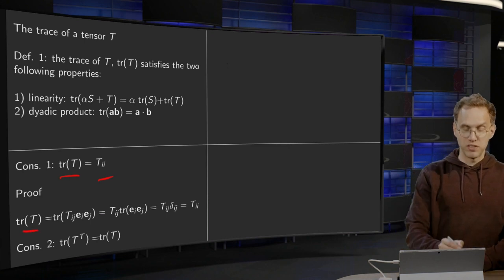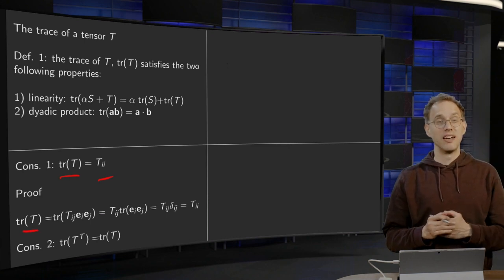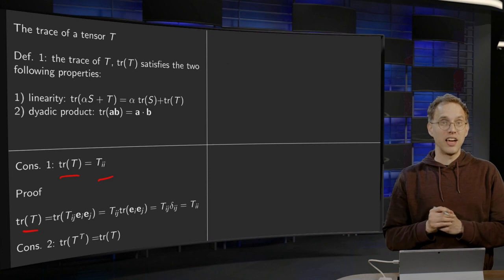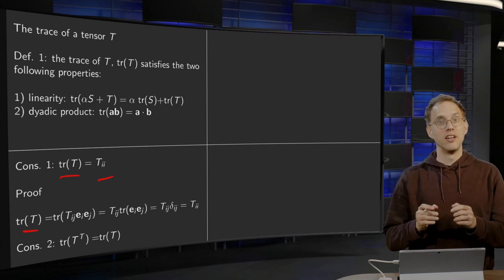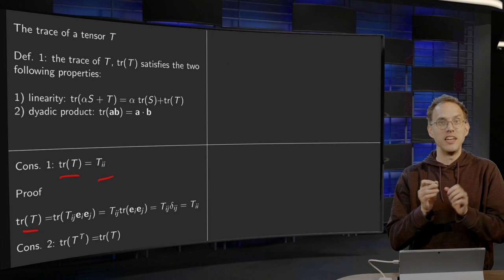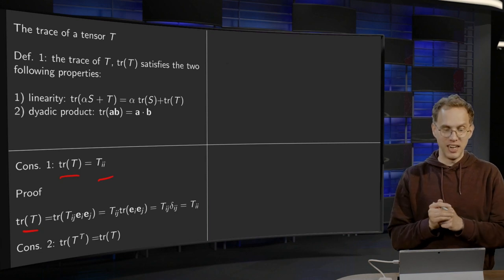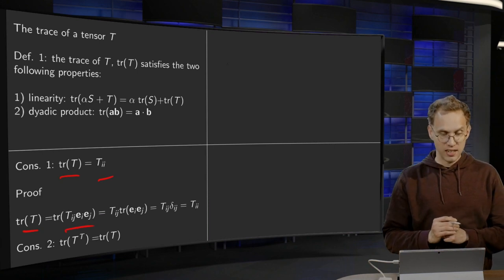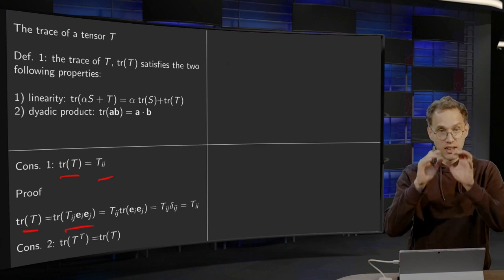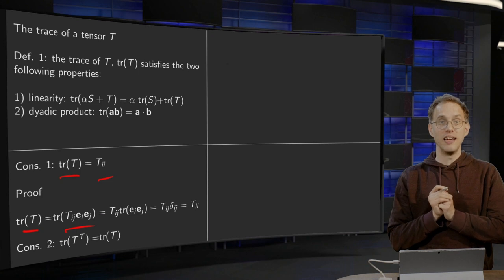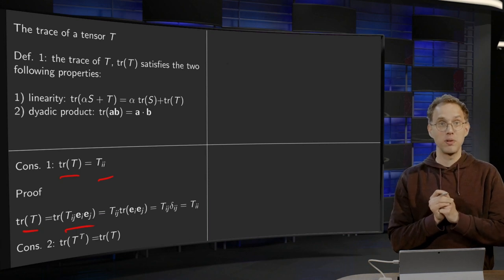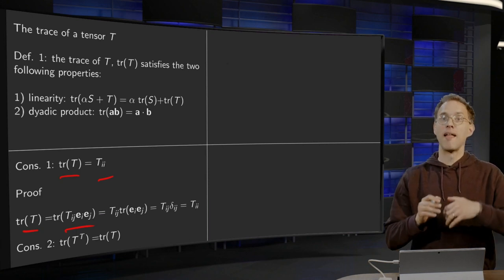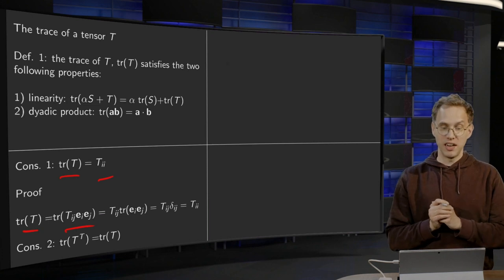For the trace of T, we have seen that we can write tensor T in terms of basis tensors ei⊗ej. We have seen that we can rewrite it as Tij times ei⊗ej, where ei⊗ej is the dyadic product between ei and ej. Then we use the linearity,